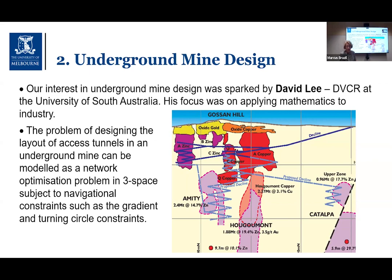The declines gently slope through the mine. There's a gradient constraint because of the huge trucks using the tunnels — usually one in seven to one in nine. What's also not shown here is that the declines have a turning circle, because mining trucks can't make sharp turns. There's a turning circle that has to be satisfied for navigability, and it's very wide — up to about 25 meters.